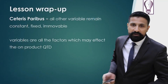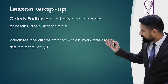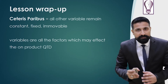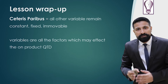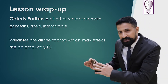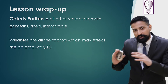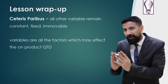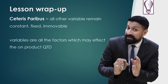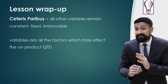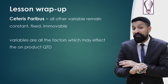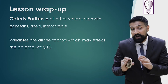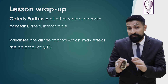Now for the wrap-up: ceteris paribus equals all other variables remaining constant, fixed, or immovable. And what are the variables? Variables are the factors which may affect the demand of the product or the quantity demanded of the product, negatively or positively.